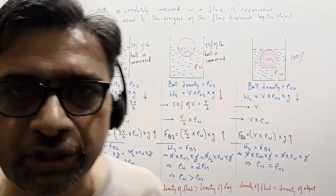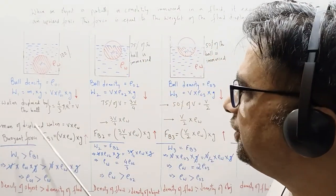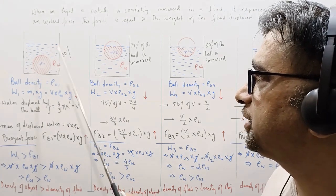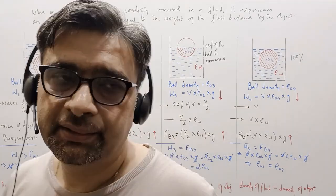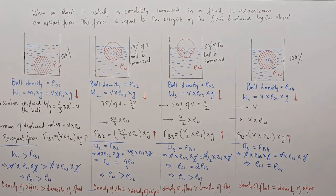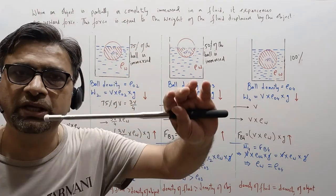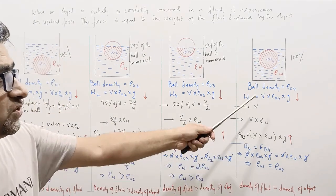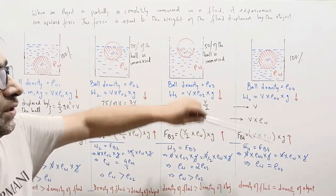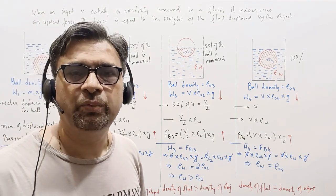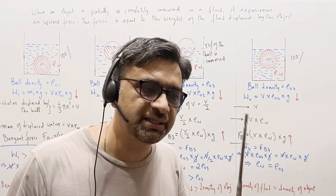In the fourth case, equating weight and buoyant force shows that the density of the fluid equals the density of the object. Summarizing all four cases: when ρ_object > ρ_fluid, the object sinks to the bottom; when ρ_fluid > ρ_object, part of the object floats above the fluid; when ρ_object = ρ_fluid, the object just fully submerges and stays there. These are the four cases of buoyant force and Archimedes' principle.